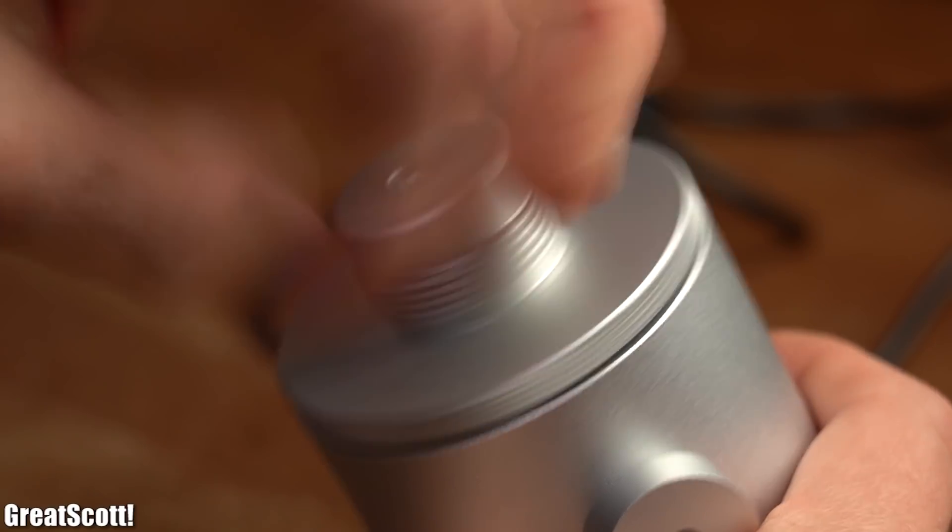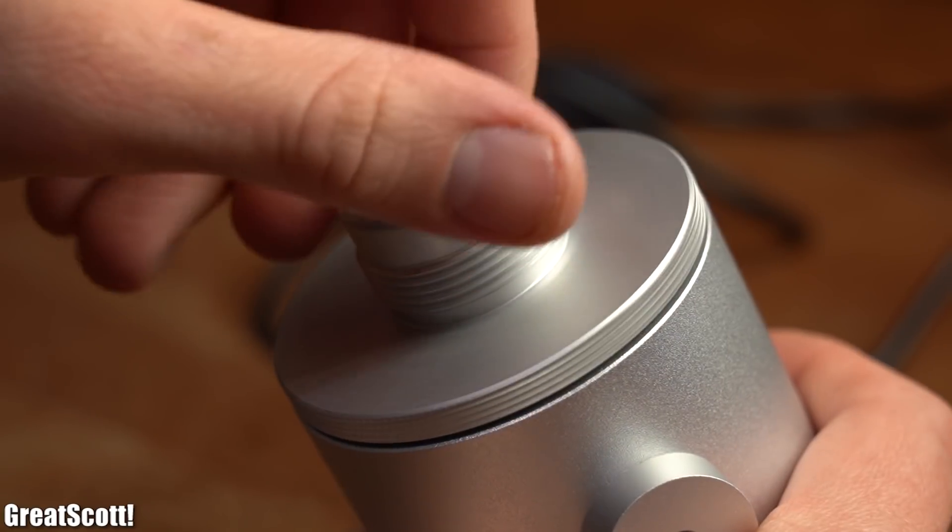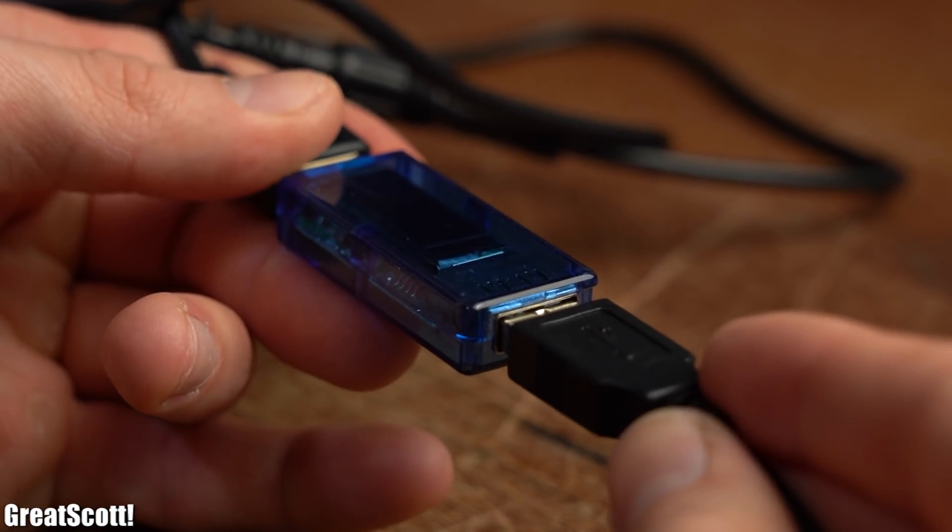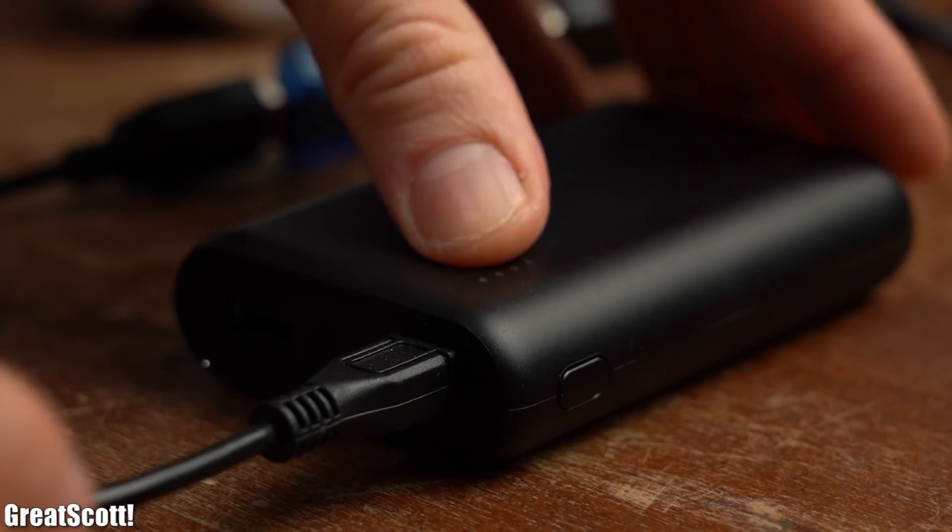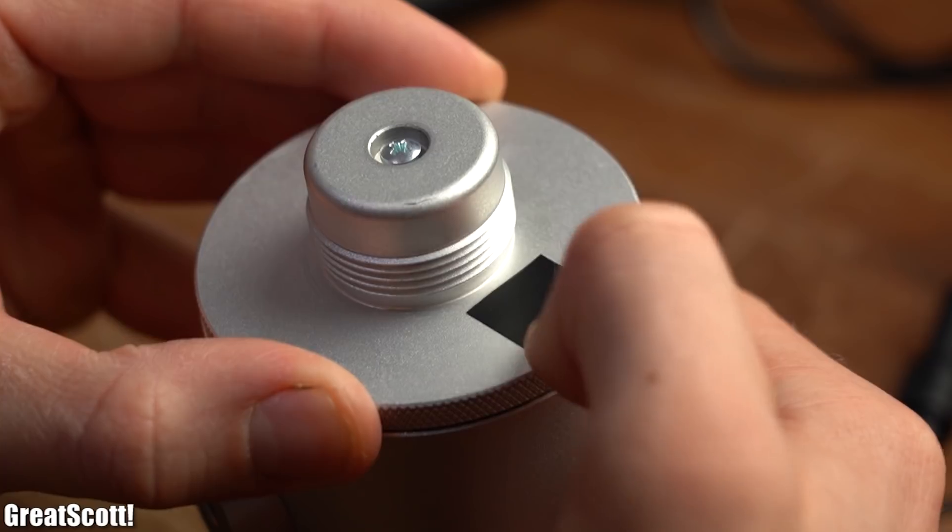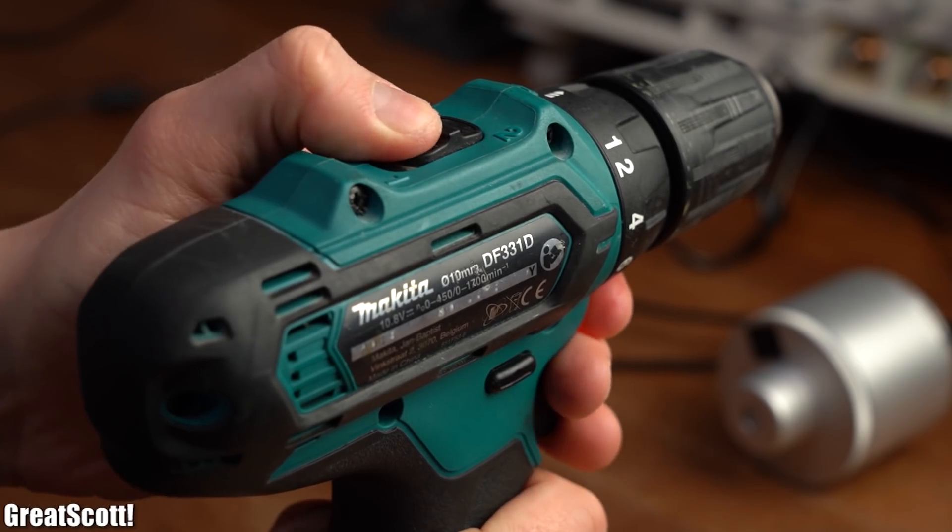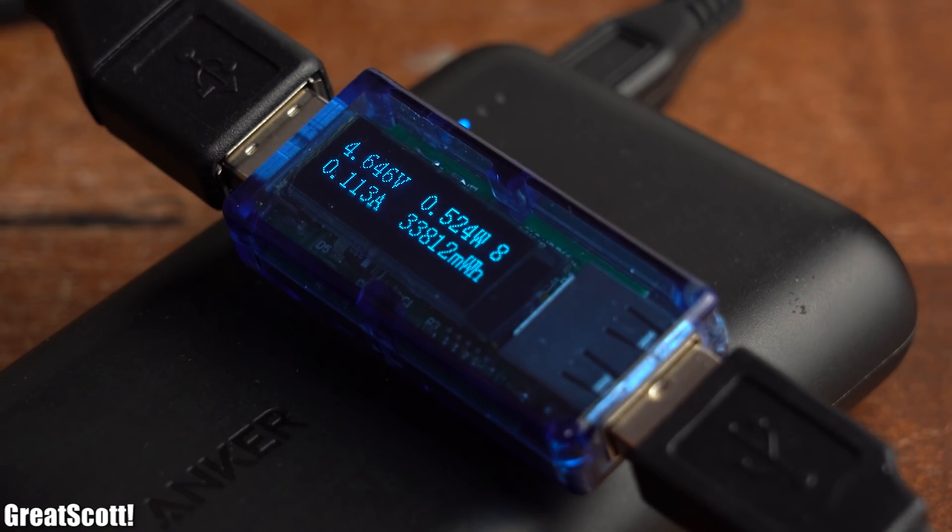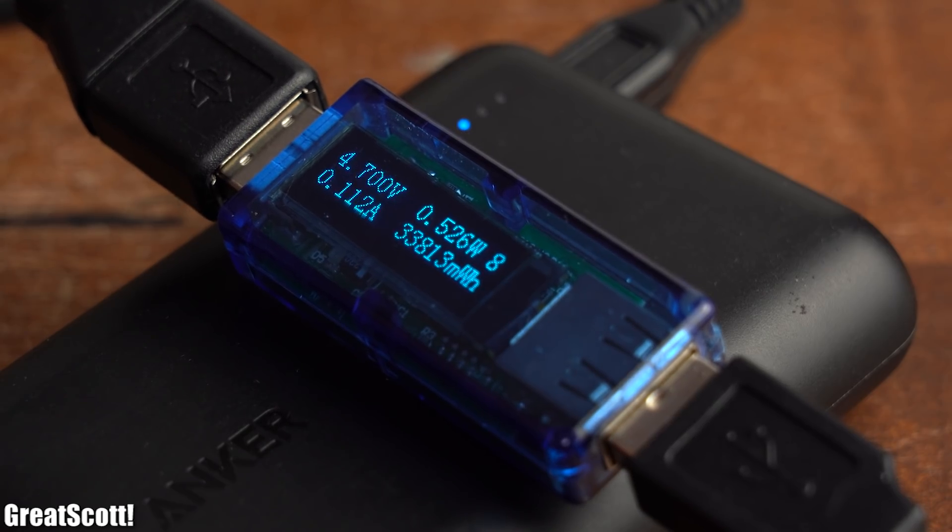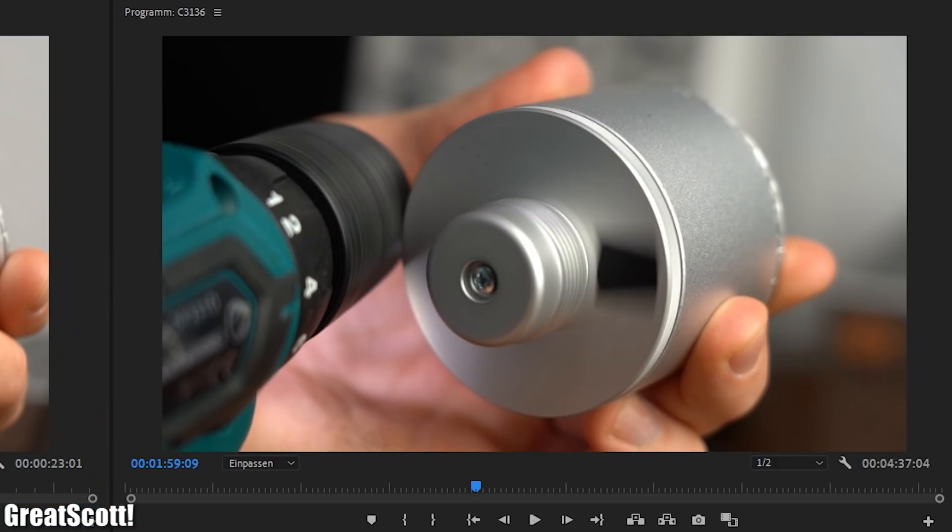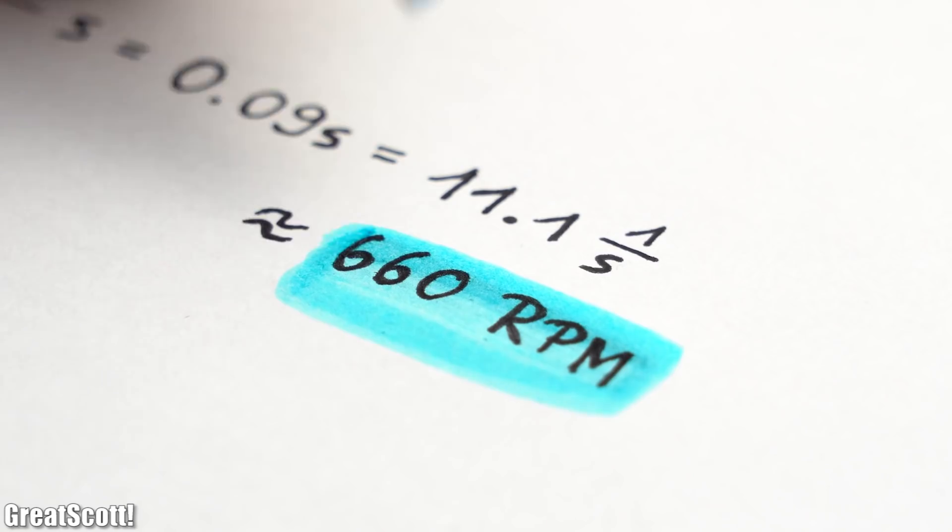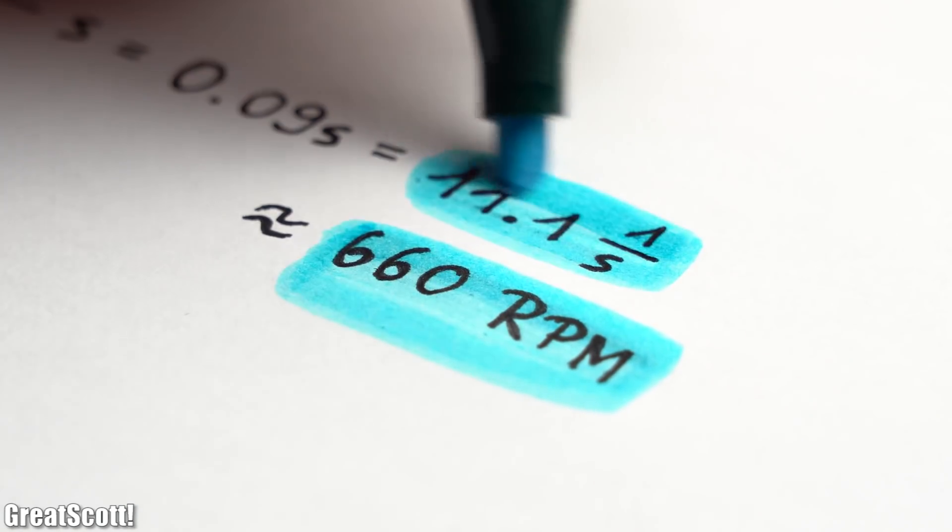First off, we have to find out how many RPM the generator requires in order to output a decent amount of power. To do that I hooked up my USB tester as well as a power bank to its USB output, attached a piece of electrical tape onto its rotor, and used my electric drill with its highest speed setting in order to spin the generator. And as you can see, it does output a usable amount of power. By filming the rotor with the slow motion function of my camera and later analyzing how much time the electrical tape required to finish one rotation, I calculated an RPM of around 660, which equals around 11 rotations per second.